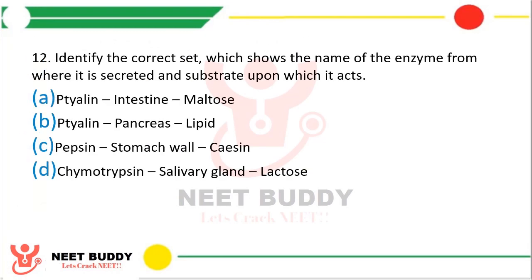Question 12. Identify the correct set showing the enzyme, where it is secreted, and the substrate it acts upon: option a. Ptyalin, intestine, maltose; option b. Ptyalin, pancreas, lipid; option c. Pepsin, stomach wall, casein; option d. Chymotrypsin, salivary gland, lactose. The correct answer is option c — Pepsin, stomach wall, casein.